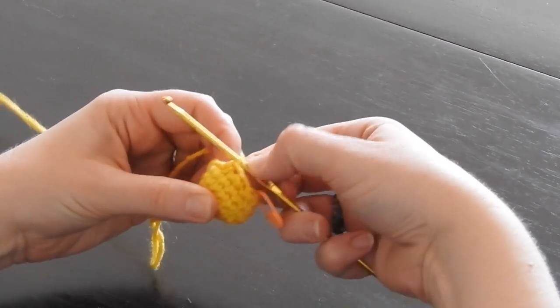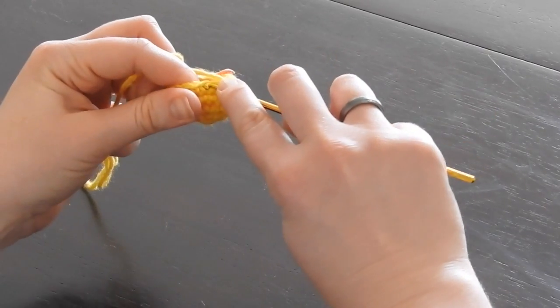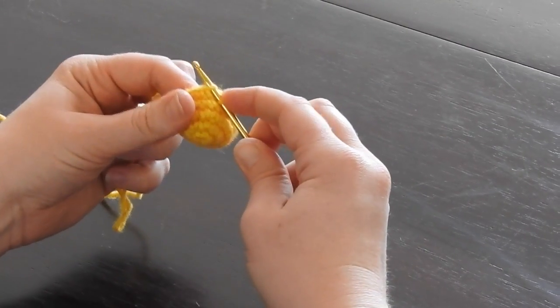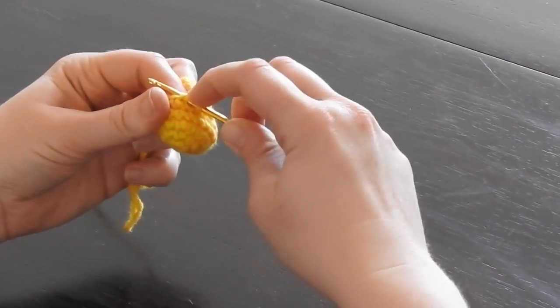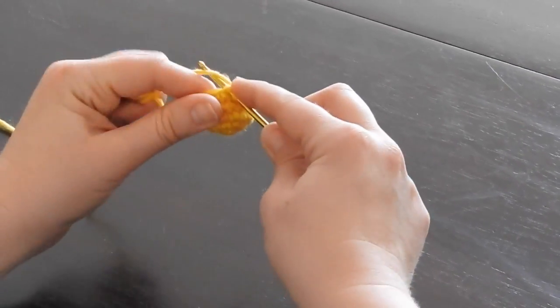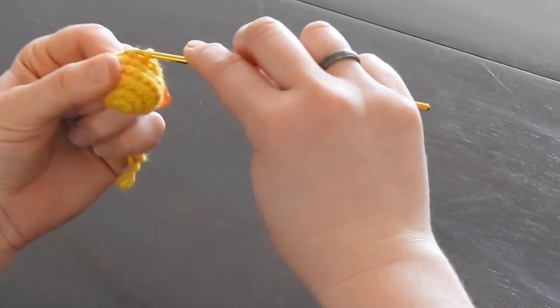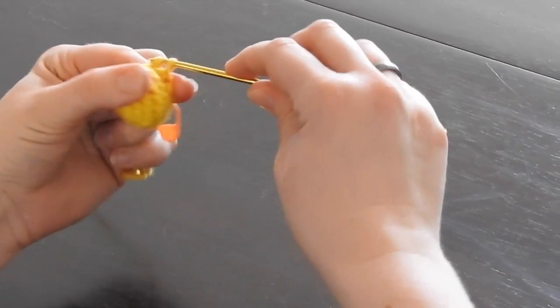Let's do another one. Go in through the first loop, then go in through the second loop, making sure not to yarn over. You only want the three loops on your hook. Yarn over, pull it through two loops - that gives you two - and yarn over again, then pull it through those last two loops. That gives you another invisible decrease.